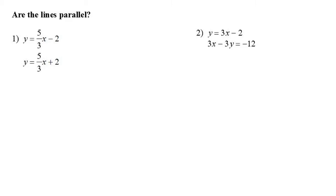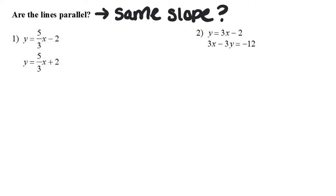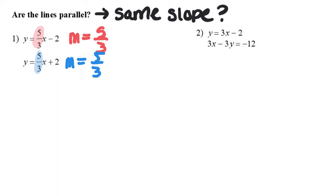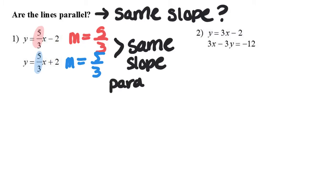Our first question asks: are the lines parallel? In order to determine if they're parallel, we have to check to see if they have the same slope. For number one, the first equation has a slope of 5 over 3, and the second one has a slope of 5 over 3 as well. So because these have the same slope, we can conclude that they are parallel.